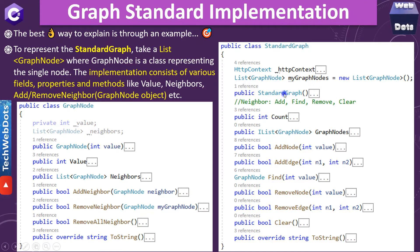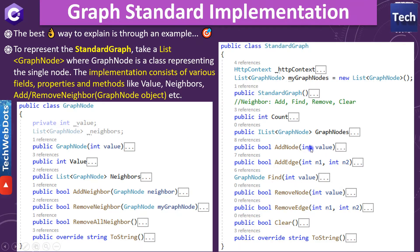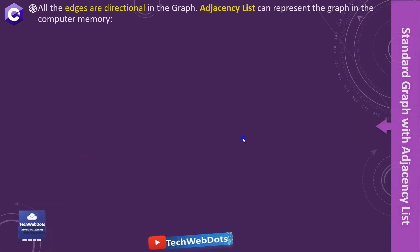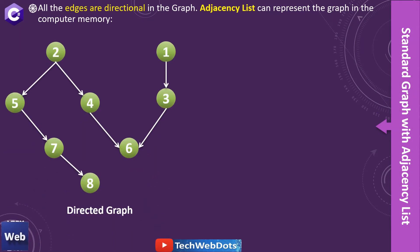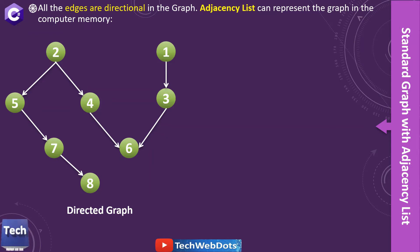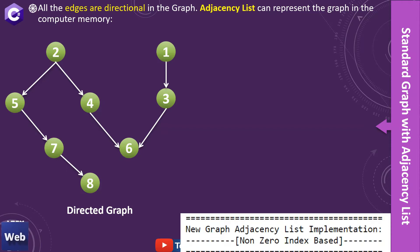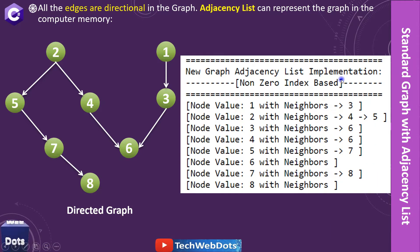The implementation consists of various fields, properties, methods, and values. To construct a complete graph using the GraphNode class, we create another class called StandardGraph. On the right-hand side you can see: a constructor, a count property returning the number of nodes, and different methods like add node, add edge, find, and remove node. The graph I am going to represent today uses directional edges, and the node values are one through eight.